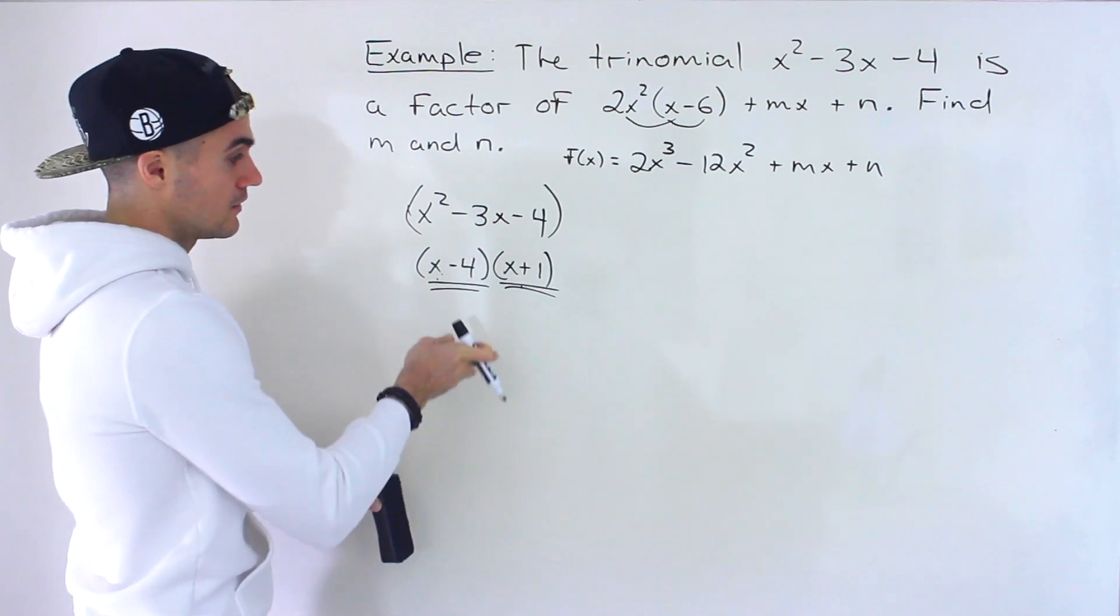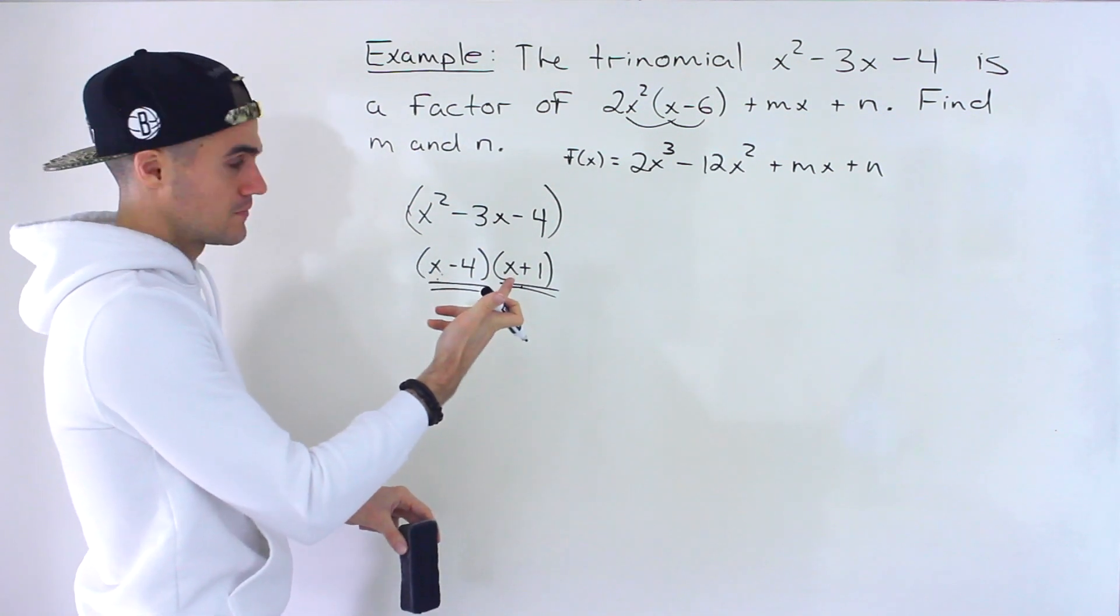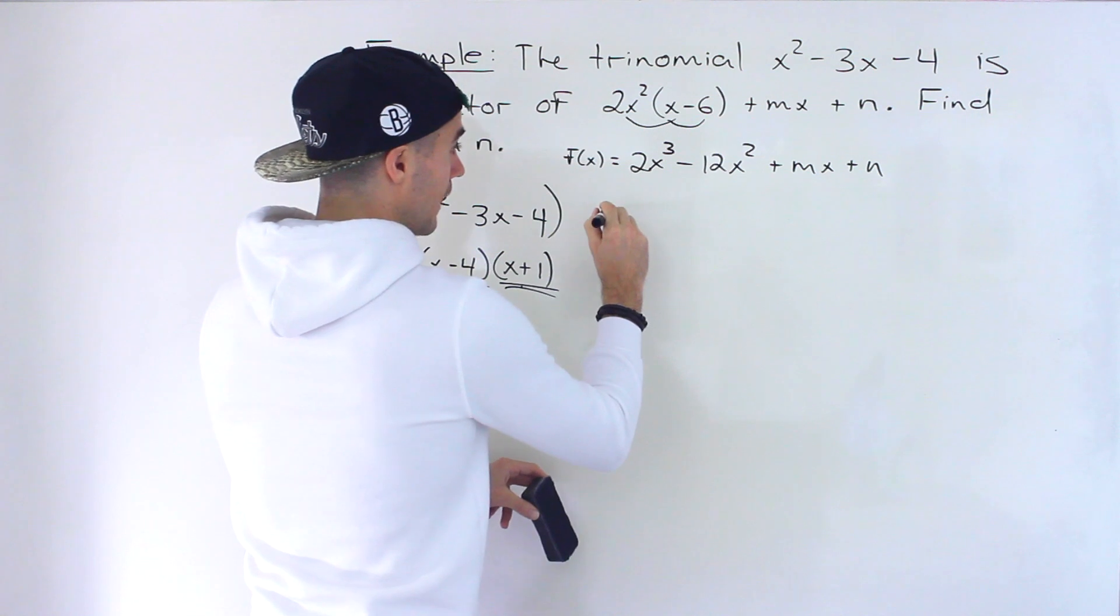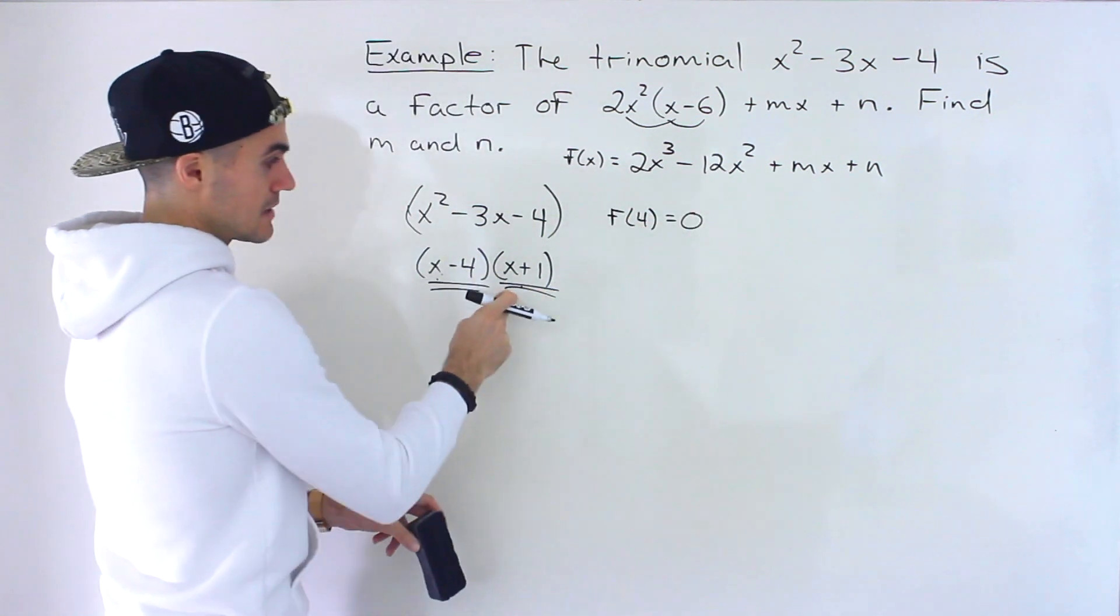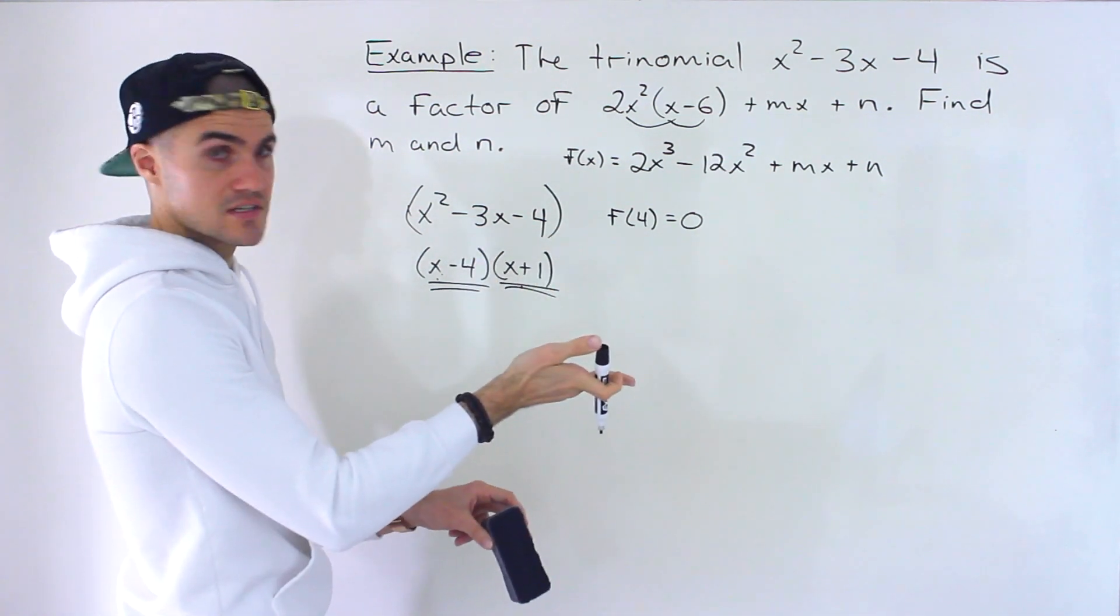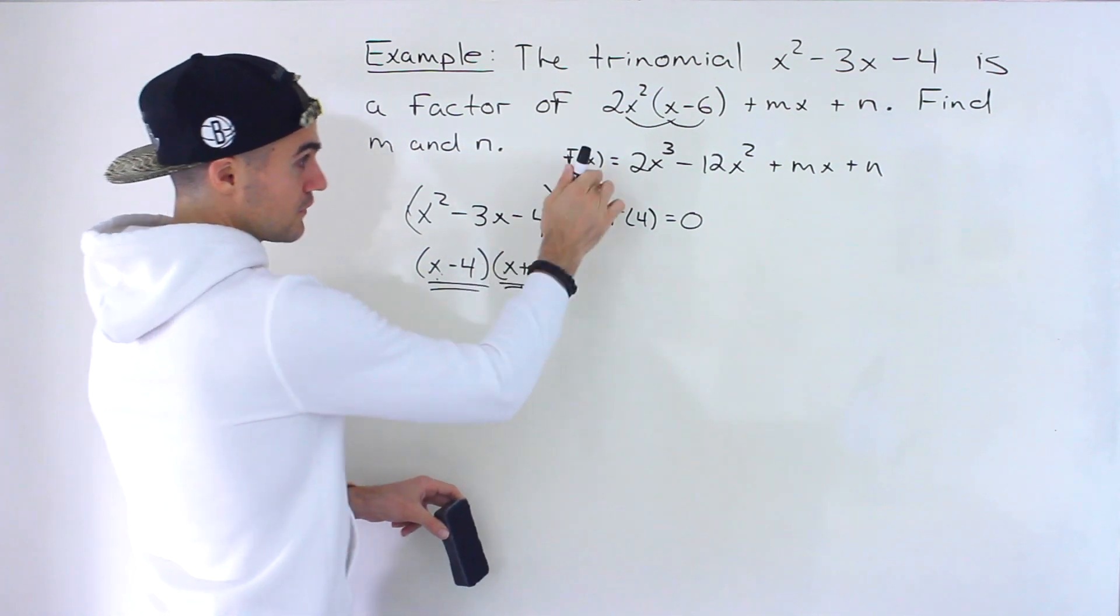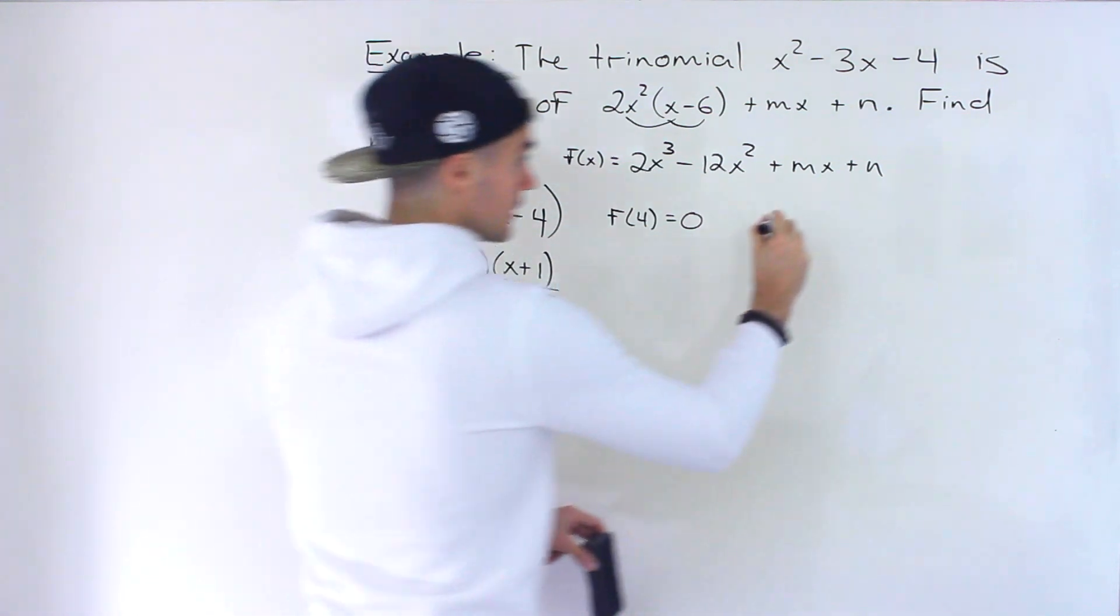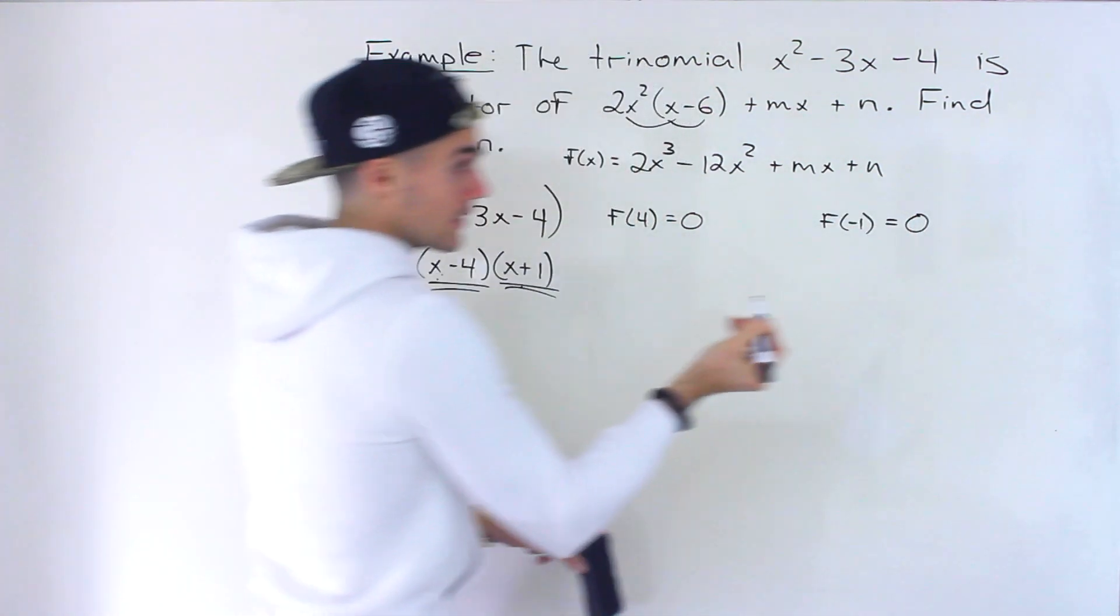And we know that the remainder is going to be f of 4 using the remainder theorem. So combining the remainder and the factor theorem we know that f of 4 equals 0. Same thing here. If we divide by a factor then the remainder is going to be 0. And the remainder using the remainder theorem if we divide a polynomial f of x by x plus 1 the remainder is going to be f of negative 1. And because it's a factor the remainder is 0.